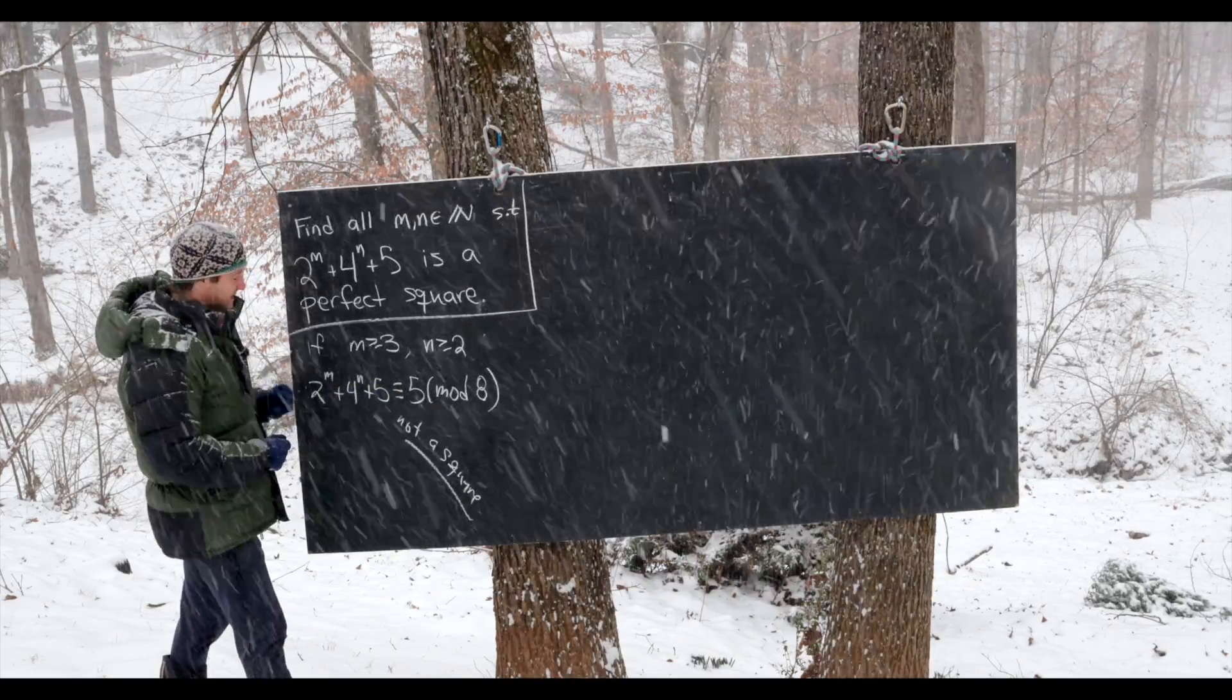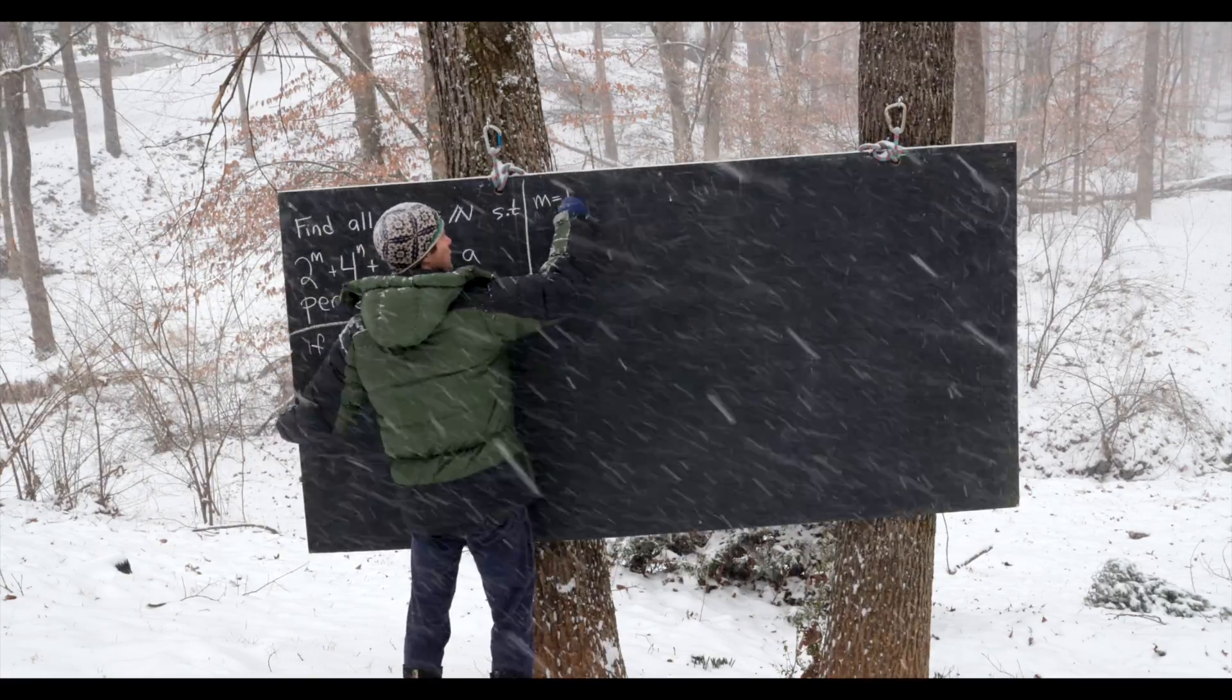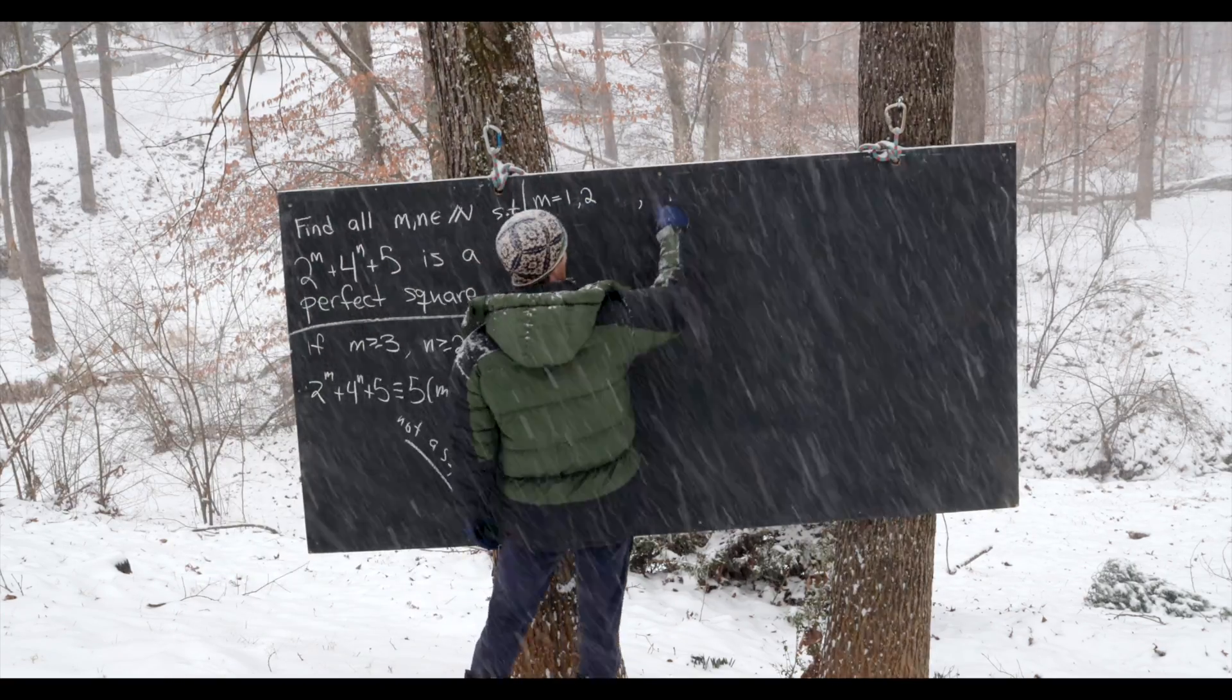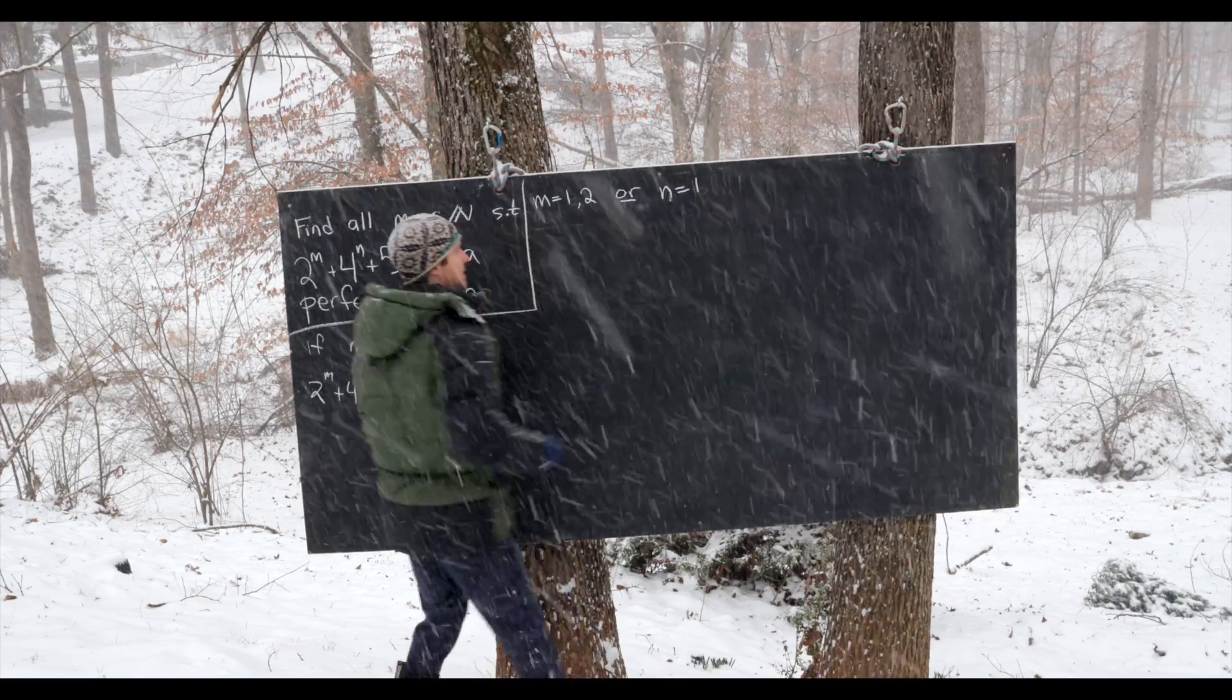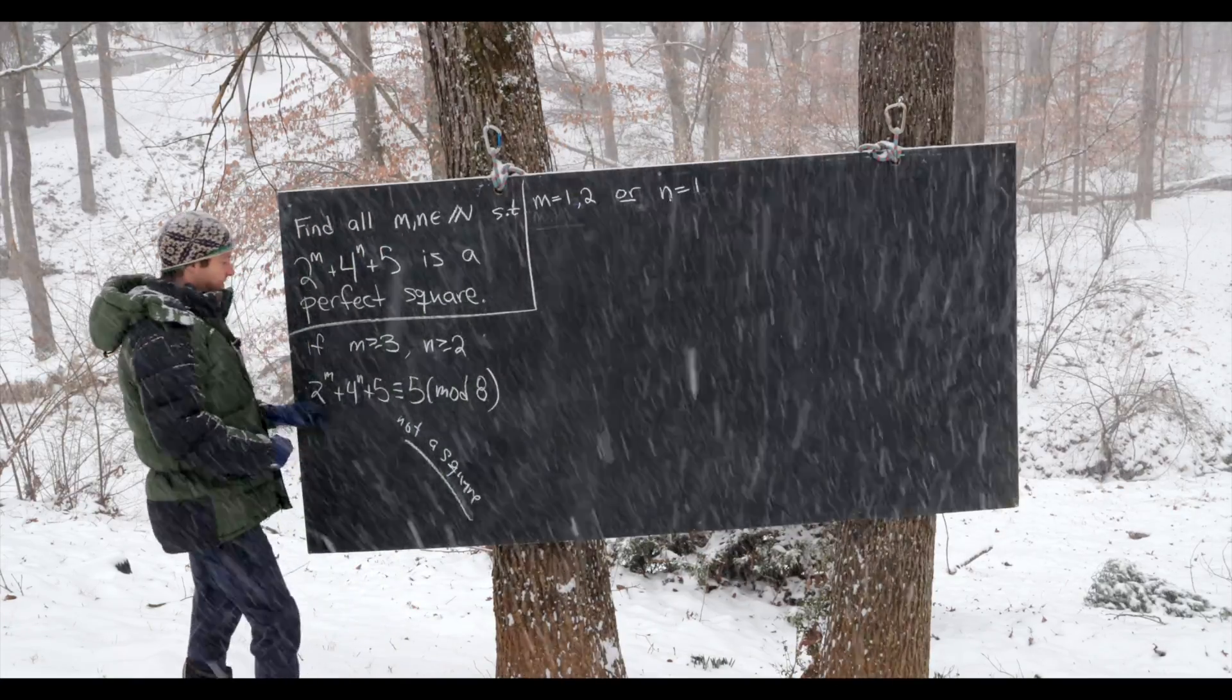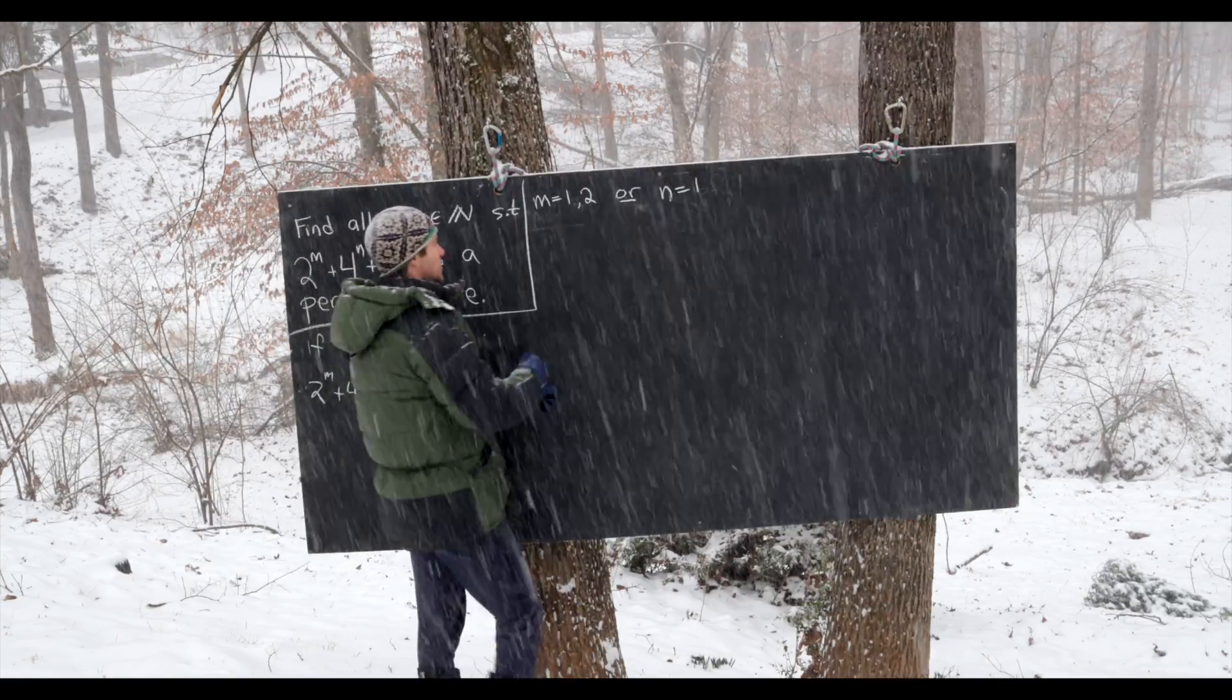Well so that tells us that the only possibilities for m are 1 and 2. So m equals 1 or 2. And the only possibilities for n are just 1. So n equals 1. So maybe let's put an or here. Because just because m is 1 or 2, that doesn't mean that n can only be 1. That's because this trick here relied on both of these reducing. Okay, so now let's look at each of these cases on their own.